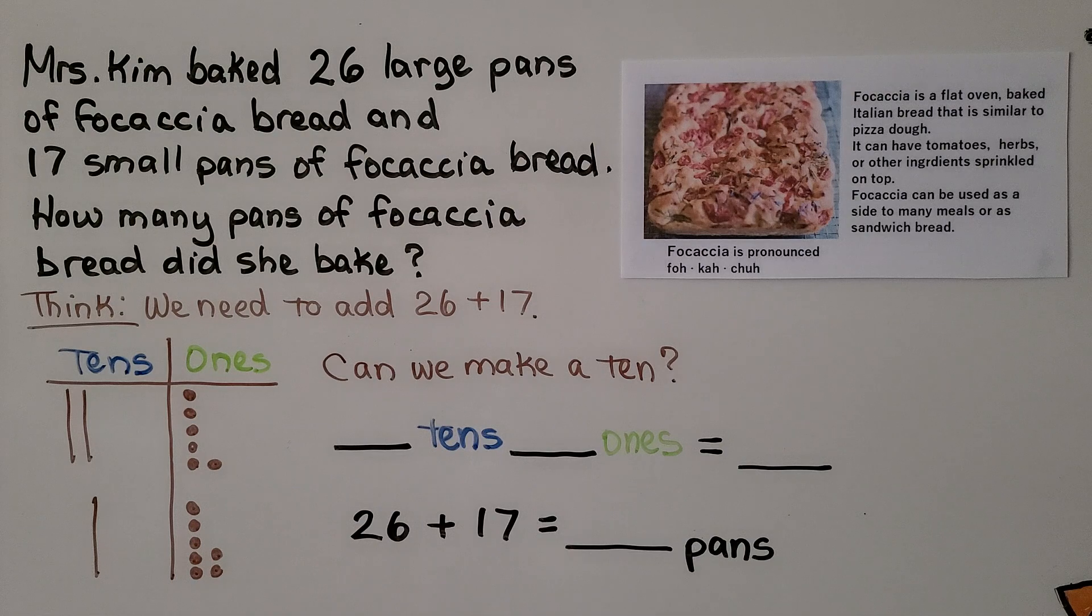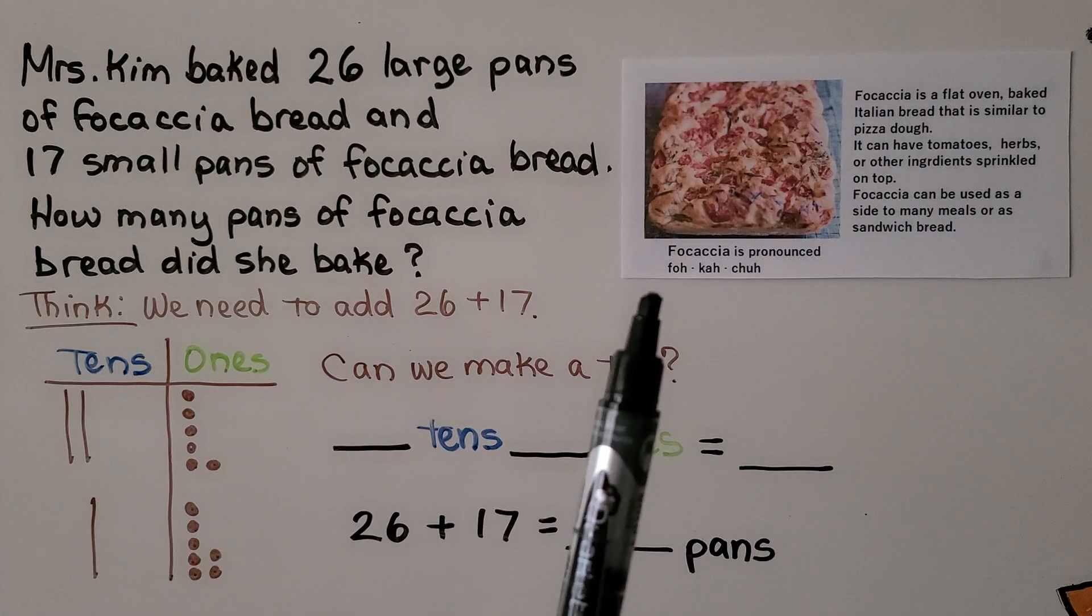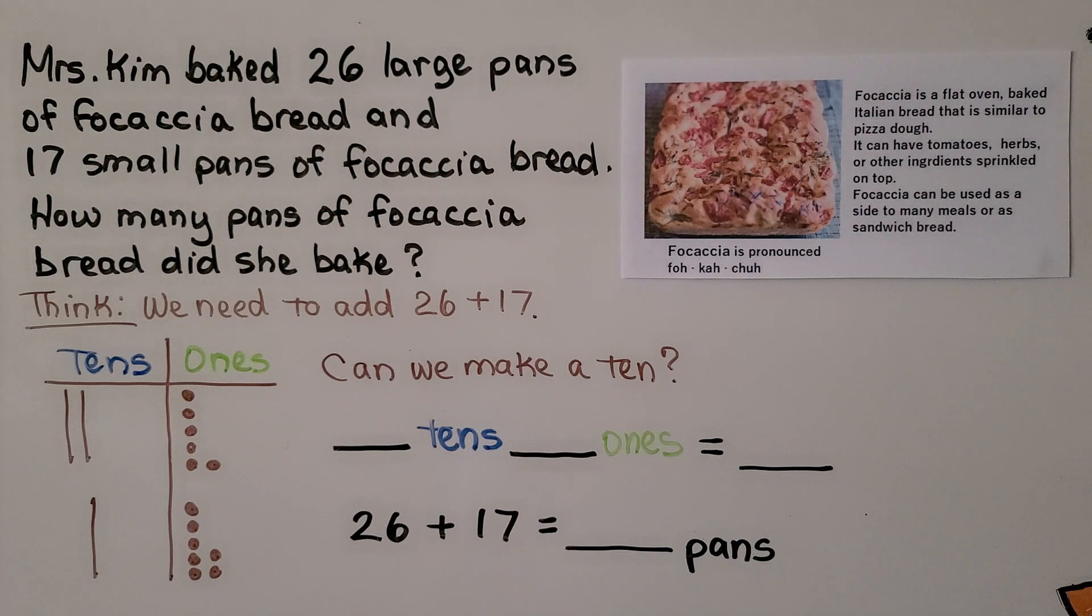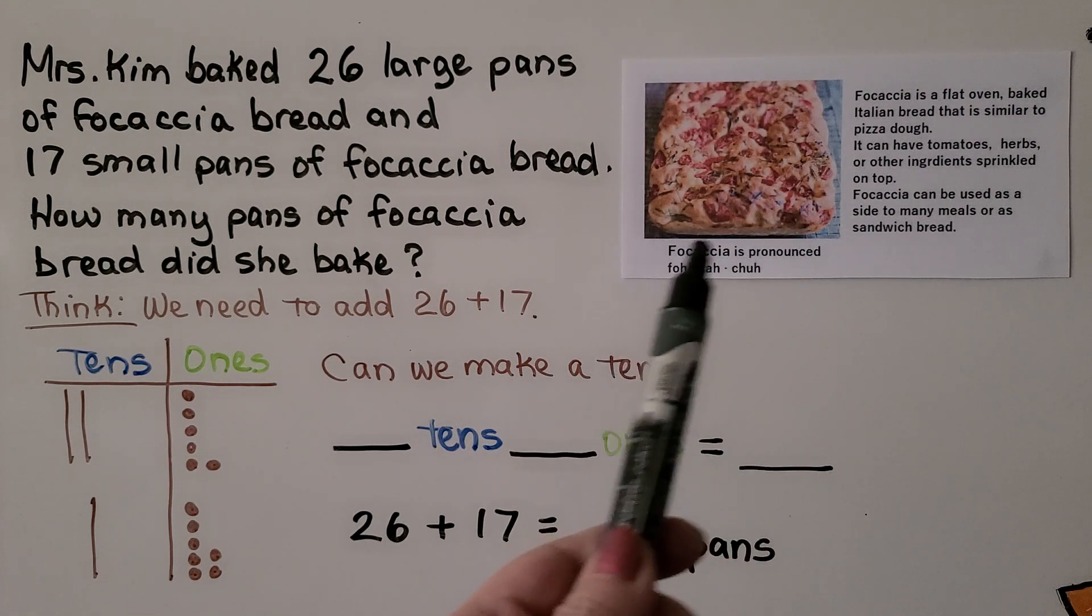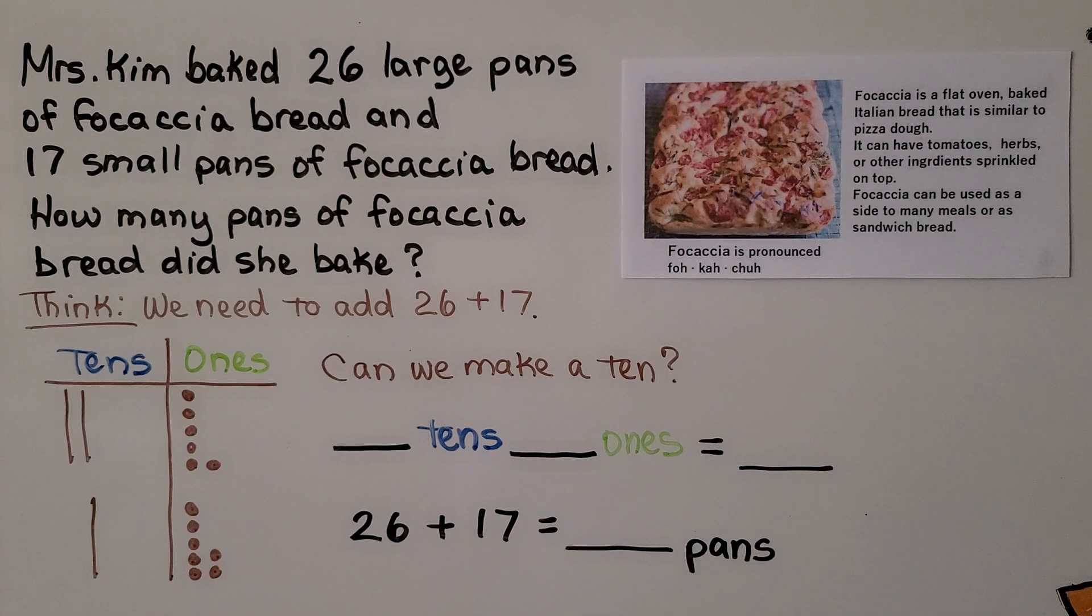I don't know if you've ever had the chance to taste focaccia. Focaccia is a flat, oven-baked Italian bread and it's similar to pizza dough. It could have tomatoes, herbs, or other ingredients sprinkled on top when they bake it, like rosemary. Focaccia can be used as a side to many meals or as a sandwich bread. You could slice it through the middle and turn it into a sandwich bread. Mrs. Kim baked 26 large pans of focaccia bread and 17 small pans of focaccia bread. How many pans of focaccia bread did she bake?